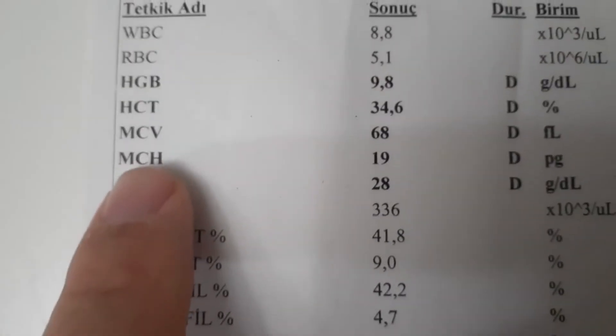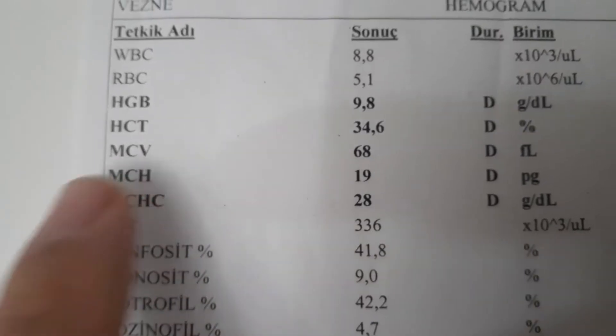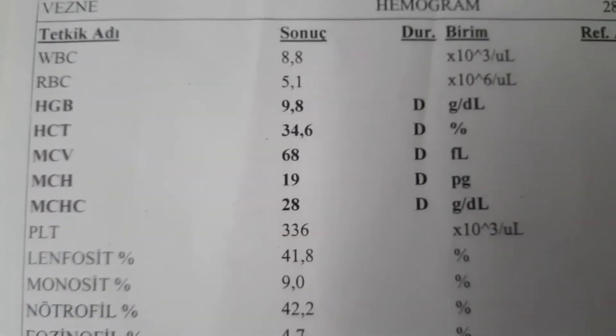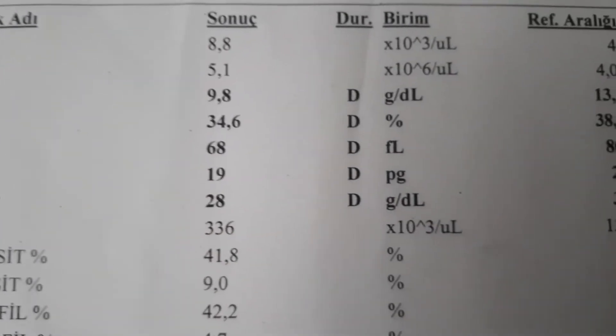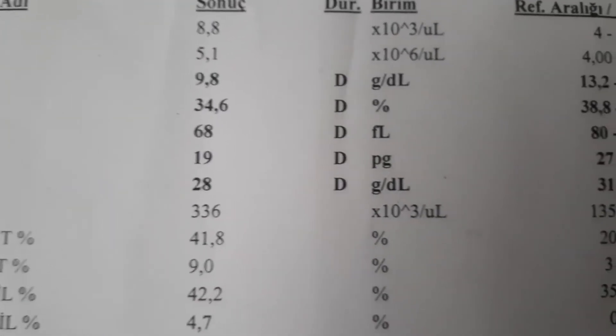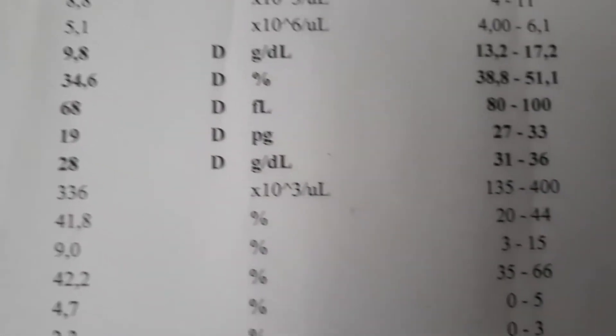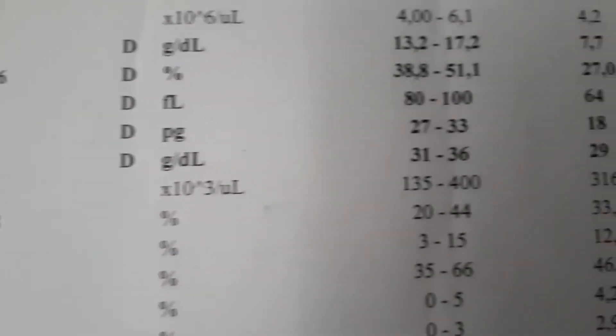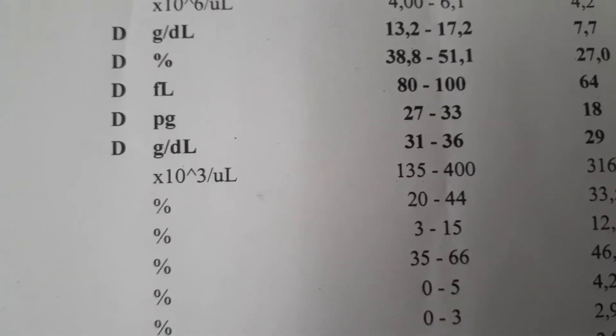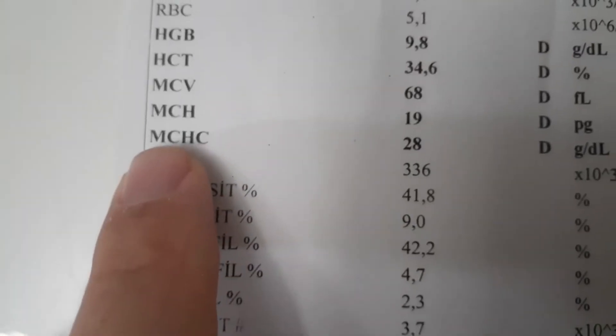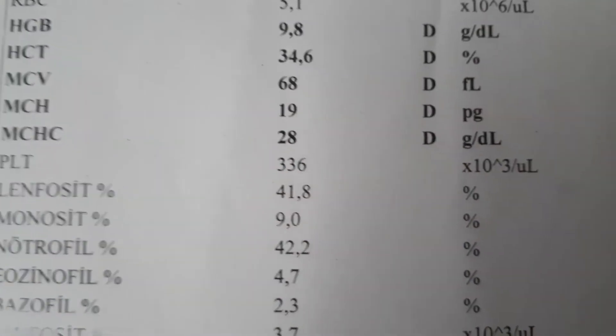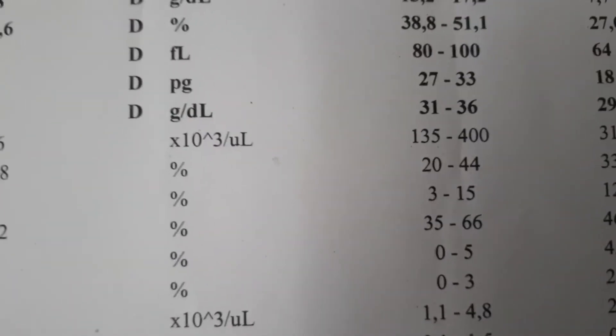In other words, high MCH indicates situations where the hemoglobin level is high in erythrocytes. A low MCH level indicates that your hemoglobin level is actually low. The main reasons for low MCH are iron deficiency anemia, some chronic disease-related anemia, thalassemia, and lead poisoning. MCHC means mean corpuscular hemoglobin concentration — the mean erythrocyte hemoglobin concentration.